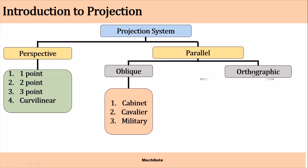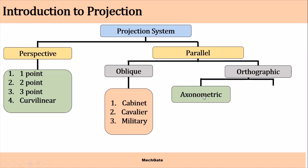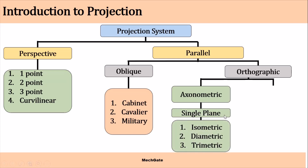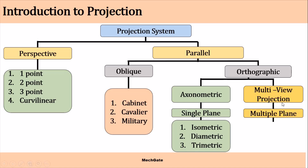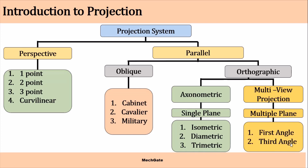Orthographic projection is further divided into axonometric projection and multi-view projection. In axonometric projection, there are three types: isometric projection, diametric projection, and triametric projection. In orthographic multi-view projection, objects are represented in multiple planes, and there are two types: first angle projection and third angle projection.